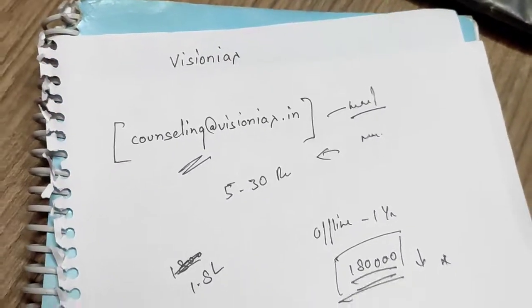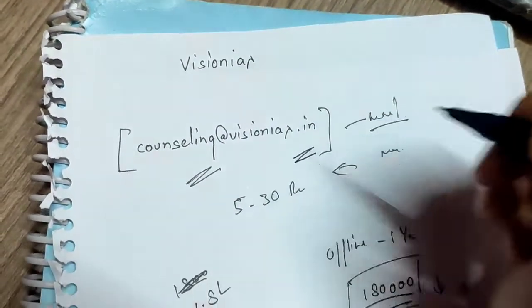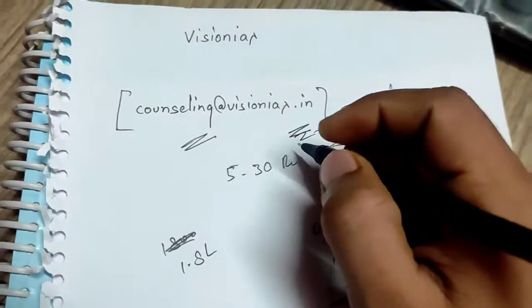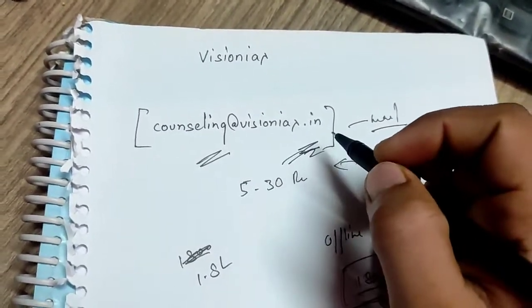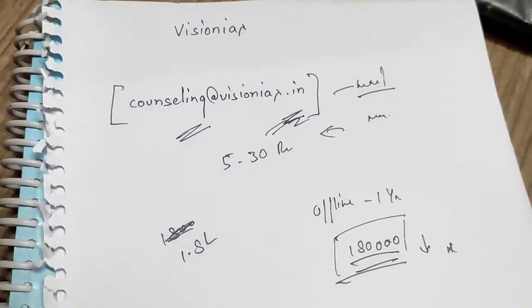Now I am making this video regarding fees. So if you need a concession in fees, then you will have to mail it. I will put the mail ID in the description below. You can mail it and talk about it, and they will give you a concession.